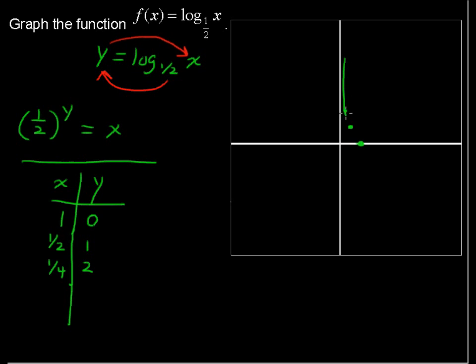It's never going to go in the negative x direction because we could never get a negative output. No matter what exponent we have for y, we will never get a negative output. You might be thinking, what about a negative exponent? Let's try it.